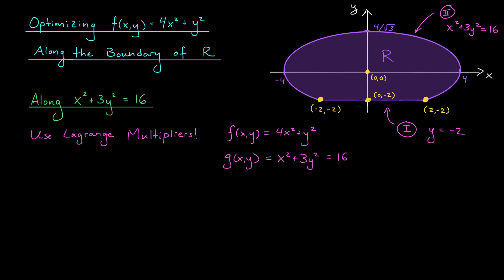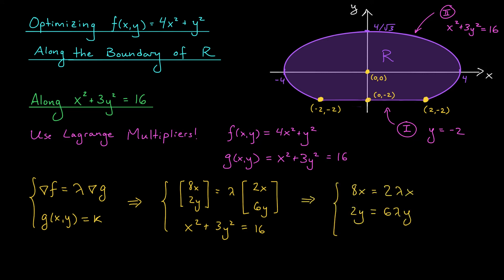Now, according to our algorithm, we need to solve the system of equations gradient of f equals lambda times gradient of g. And of course, our points need to lie on the constraint curve, so g(x,y) must also be equal to k. Since the gradient of f is the vector (8x, 2y), and the gradient of g is (2x, 6y), we get the following three equations. 8x equals 2 lambda x, 2y equals 6 lambda y, and x squared plus 3y squared equals 16. Maybe we'll call these equations 1, 2, and 3.